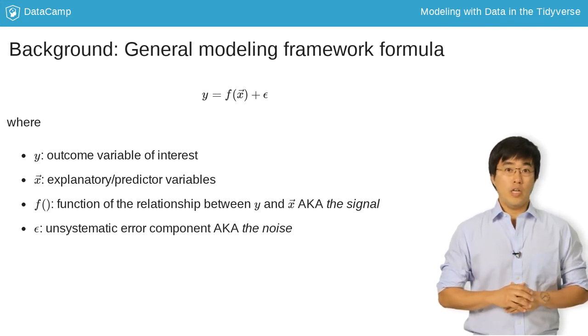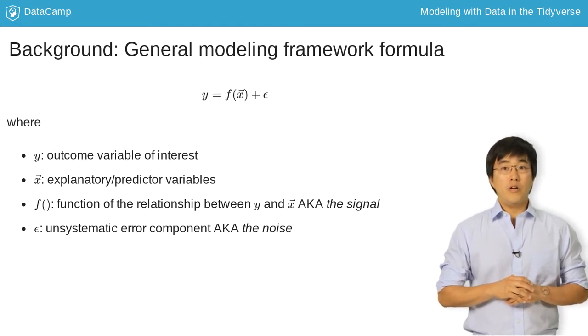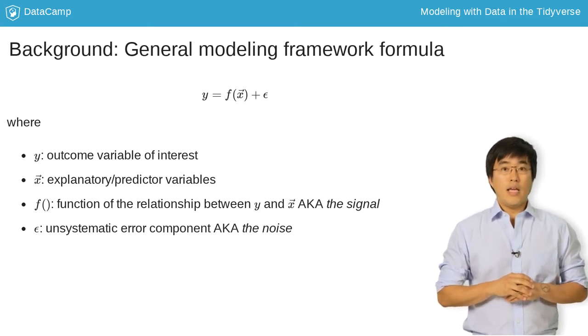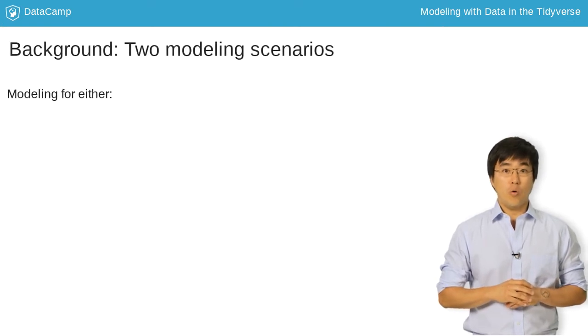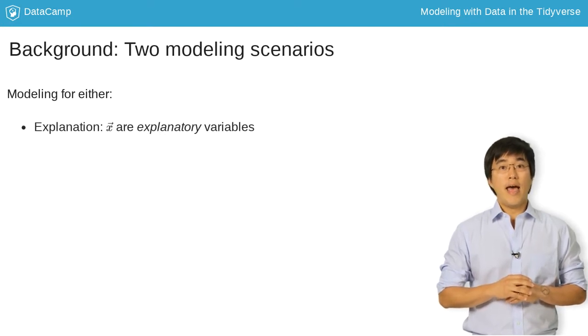Let's first focus only on Y and X and revisit F and epsilon later. Previously, I called X both explanatory and predictor variables. Which term you use depends roughly on which modeling scenario you're addressing. If you want to explain what factors are associated with or cause the outcome variable, you are modeling for explanation, and thus X are explanatory variables. If you want to make predictions of the outcome variable, you are modeling for prediction, and thus X are predictor variables.